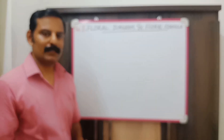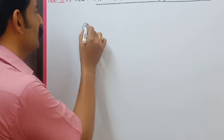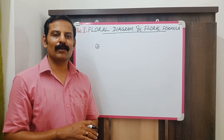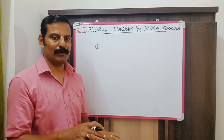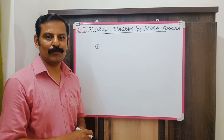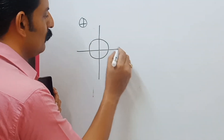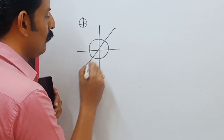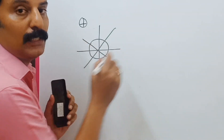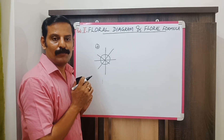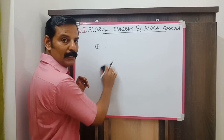The first symbol represents an actinomorphic flower. That means you can divide the flower into two equal halves cutting through any plane of the flower. If this is a flower, you can cut it into two equal halves through any plane passing through the radius of the flower. Such a flower is known as an actinomorphic flower.